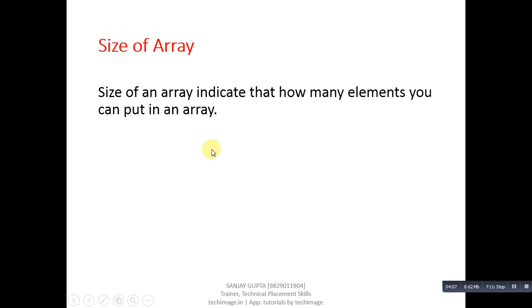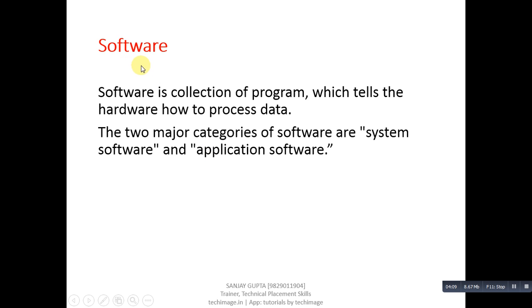Software is collection of programs which tells the hardware how to process data. The two major categories of software are system software and application software.